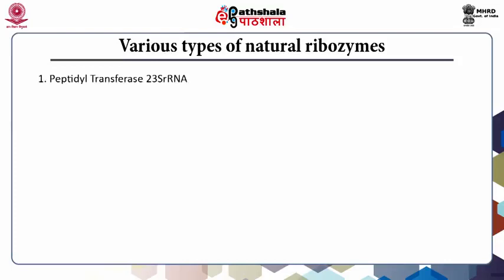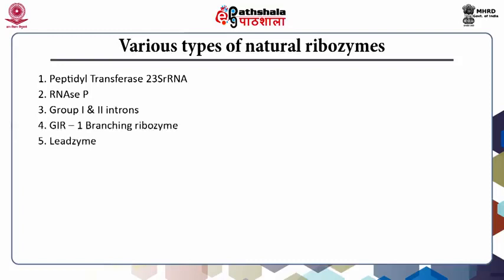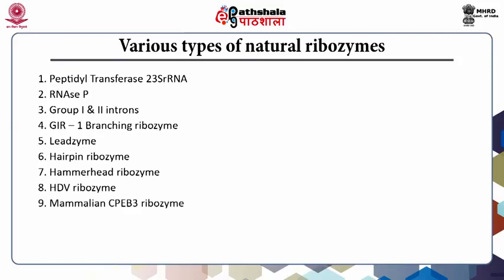The natural ribozyme types include: peptidyl transferase (23S RNA), RNAs P, Group 1 and Group 2 introns, GIR1 branching ribozyme, leadzyme, hairpin ribozyme, hammerhead ribozyme, HDV ribozyme, mammalian CPEB3 ribozyme, VS ribozyme, GLMS ribozyme, and COTC ribozyme.